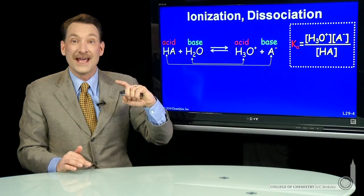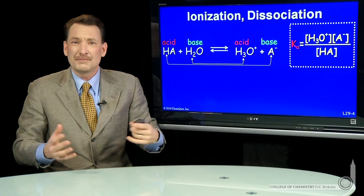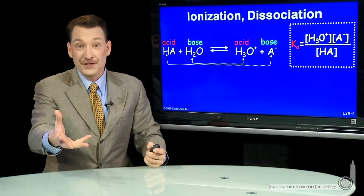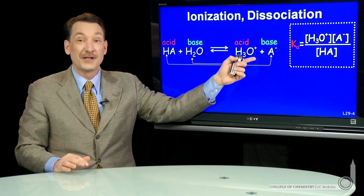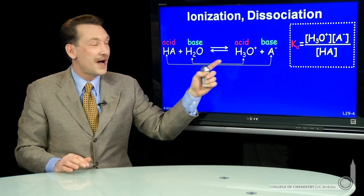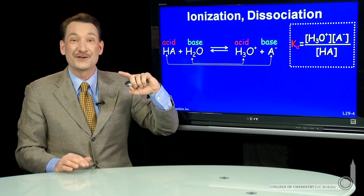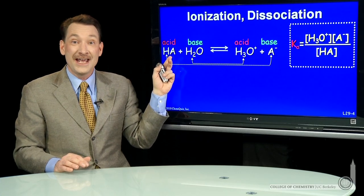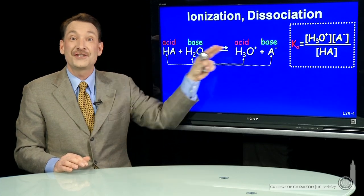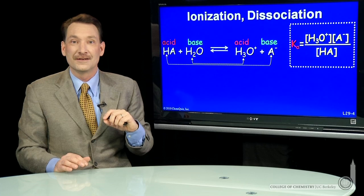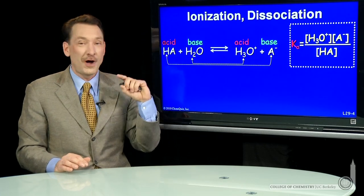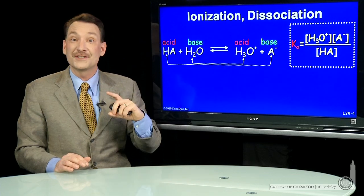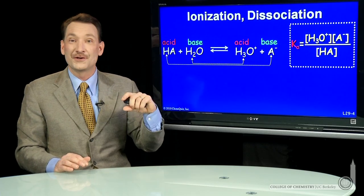This Ka has a special label, but it behaves like a normal equilibrium constant. In particular, if it's large, then the equilibrium lies towards the products. A lot of H3O plus is produced, and a high percentage of HA dissociates — for strong acids. For weak acids, a smaller percentage dissociates.